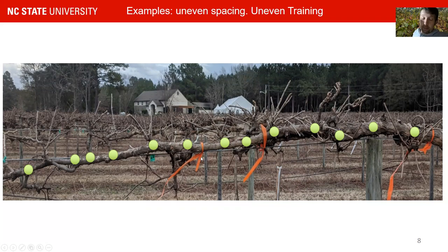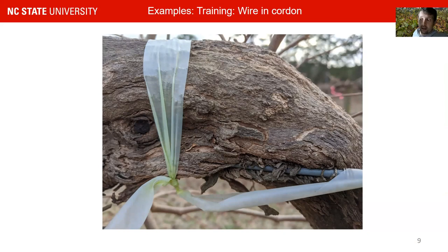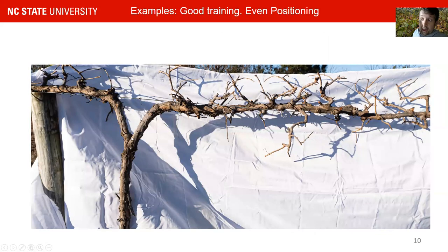That can also be avoided with better pruning and better training techniques. Another thing we see a lot in muscadines is a scenario where your cordon is basically split because it was growing along the inside of the wire. Again, that can also be avoided with the correct training techniques. I want to show you the good example. This is a good example — this is a seven or eight year old vine. You can see that you do have some of the issues I showed, such as a little bit of wire growing into the vine.